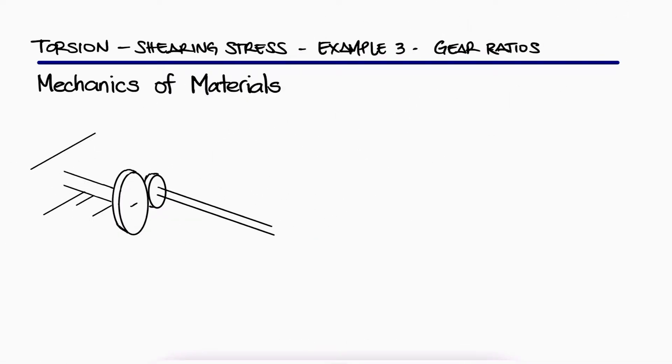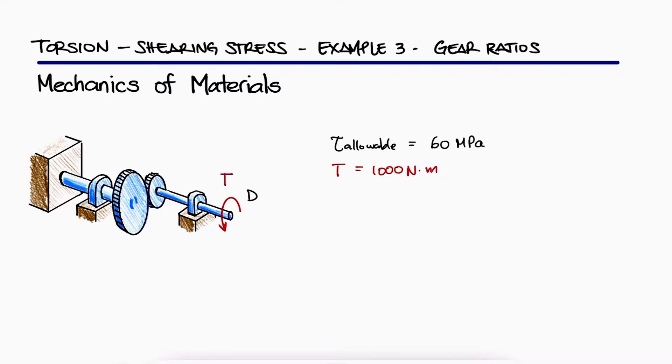If the allowable shearing stress is 60 MPa for both shafts and the torque of magnitude 1000 Nm is applied at D, what are the required diameters for shafts AB and CD?